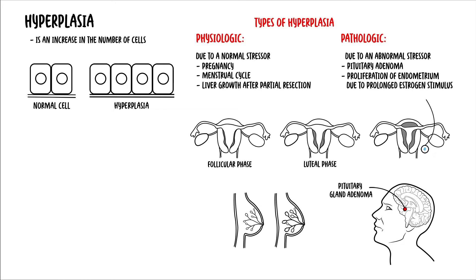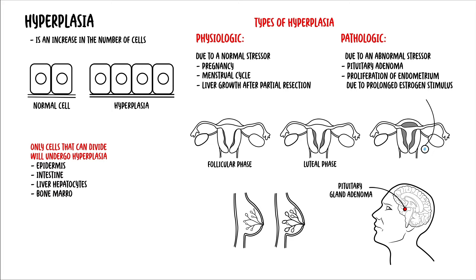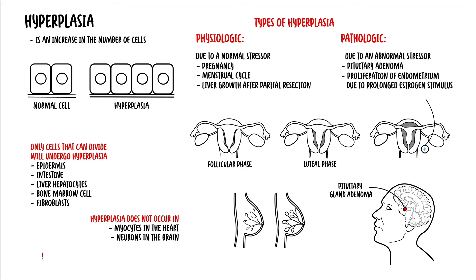An important point regarding hyperplasia is that only cells that can divide will undergo hyperplasia. These cells include the epidermis, intestinal cells, liver cells, bone marrow cells, and fibroblasts. Hyperplasia does not occur in myocytes of the heart or neurons of the brain, because these cells do not undergo mitosis or cell division.